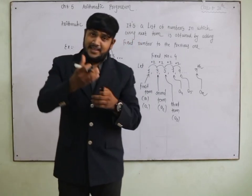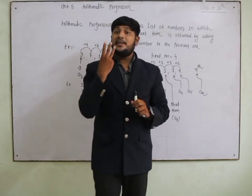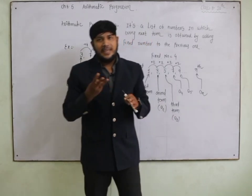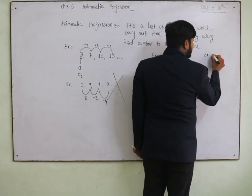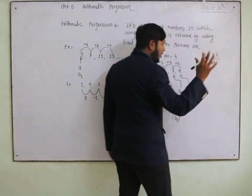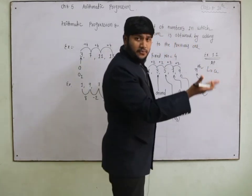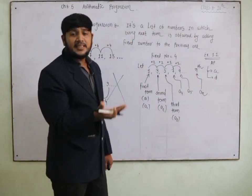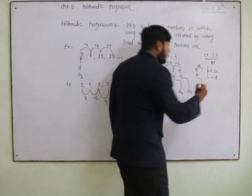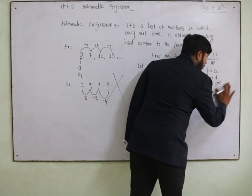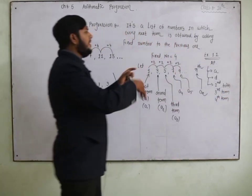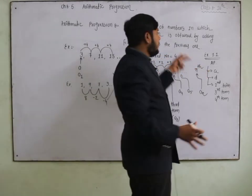Now, in this chapter we have three exercises, and a fourth one which is optional. In the first exercise, we will understand what AP is — we will find the value of 'a' (the first term) and 'd' (the difference), and find the second, third, and fourth terms.